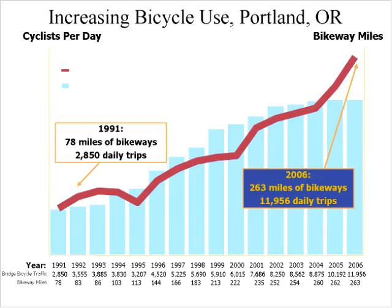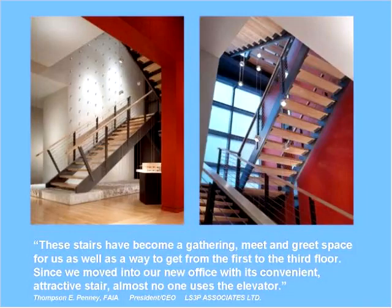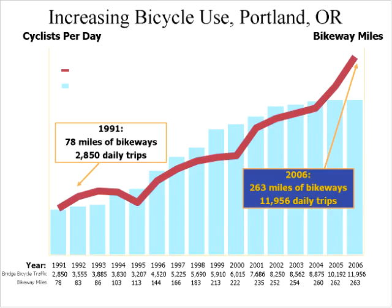When you put the infrastructure in place for children, other people use it as well. Look at the success Portland has had — it's routine for people to show up at a meeting in bicycle clothes. Wouldn't it be great if that were true in Los Angeles with its marvelous climate and relatively flat landscape? This should be the bicycling capital of the United States. We also need to advocate for Safe Routes to Universities, because students want to bicycle but don't feel safe doing it.